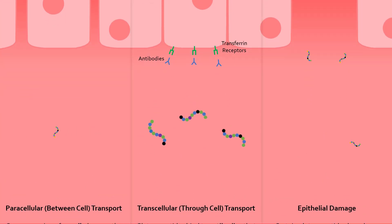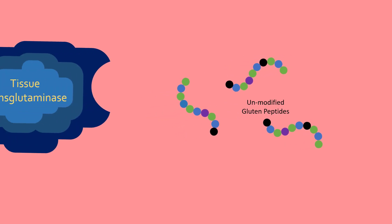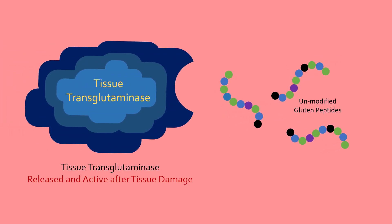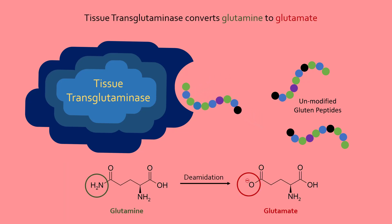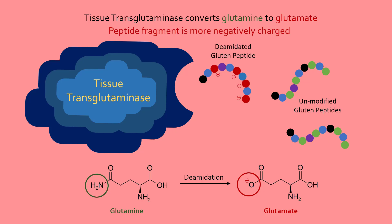Once inside the lamina propria, these peptides are then modified by an enzyme called tissue transglutaminase, which is normally found within cells but released during active tissue damage. This enzyme changes the glutamine residues to glutamate, resulting in a more negatively charged peptide fragment. Remember this step — it will be important later.